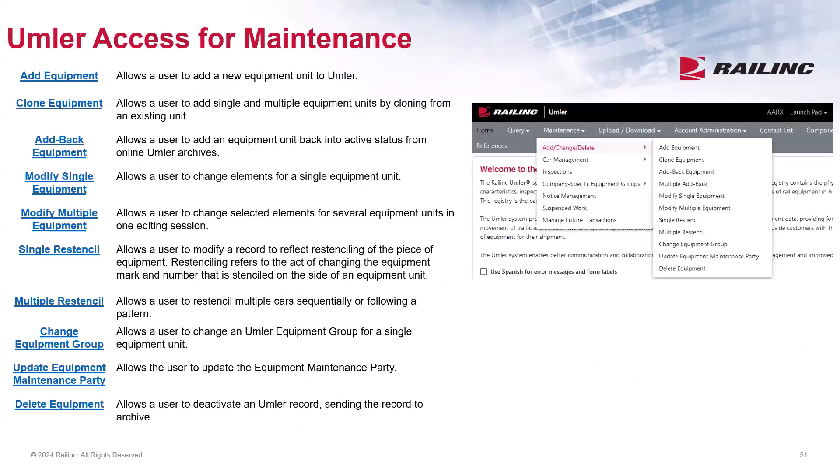To recap permissions, if the user has the appropriate Umler access for maintenance, they can access the various maintenance options to submit update transactions. They first must be granted equipment rights and inspection rights access. Last week, we conducted an introduction to Umler webinar presentation that covers the basics of Umler and how to perform many of the maintenance transactions. Railinc recommends this webinar to all new Umler users. The webinar presentation may be found on the main Railinc site.